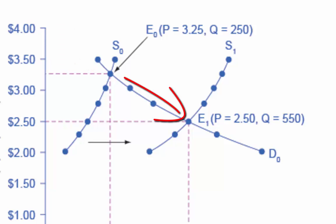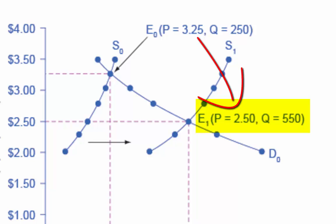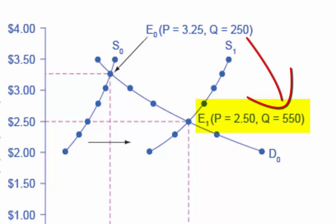It's an increase in supply. After we determine this, we need to determine the new equilibrium, E-1. In this case, the new equilibrium price is $2.50, which is a decrease from the original equilibrium price. And the equilibrium quantity is 300, which is an increase from the original equilibrium quantity.